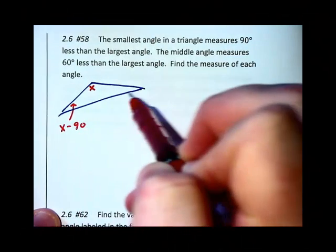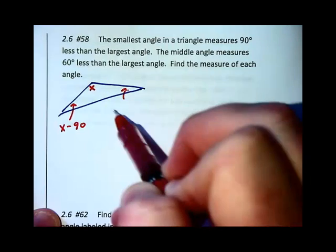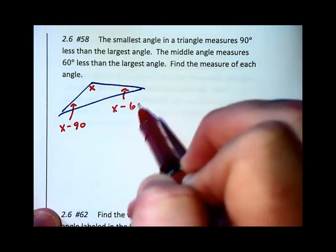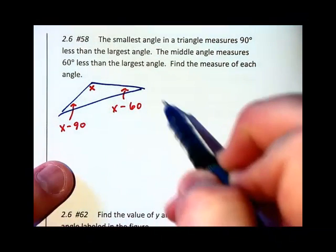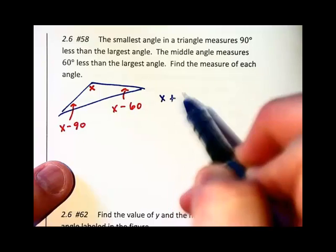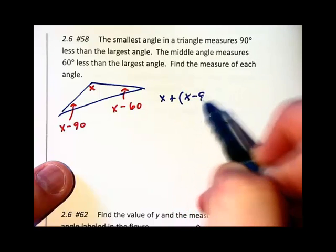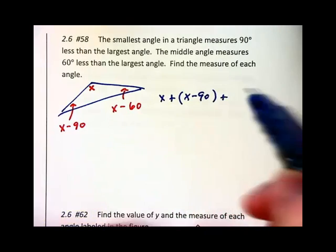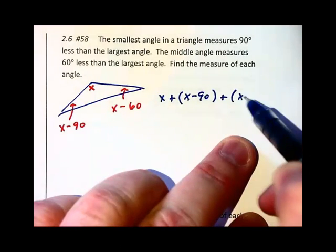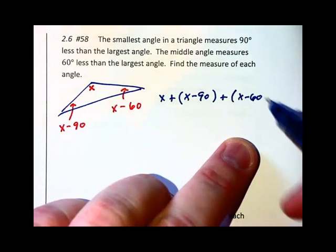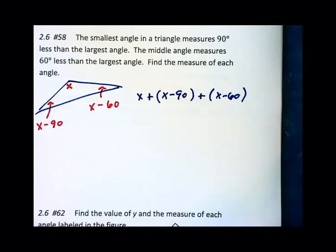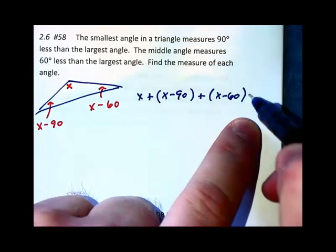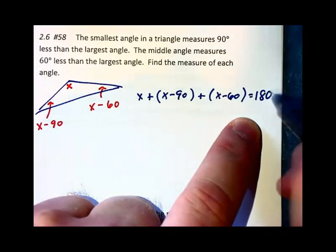The smallest is 90 less than the largest, so that would be x minus 90. And the middle one, not drawn to scale, is 60 less than the largest. So I have three angles, x plus x minus 90 plus x minus 60. And I don't have a perimeter this time. This time we're dealing with angle measures. And so the sum of all these angle measures should be 180 degrees.